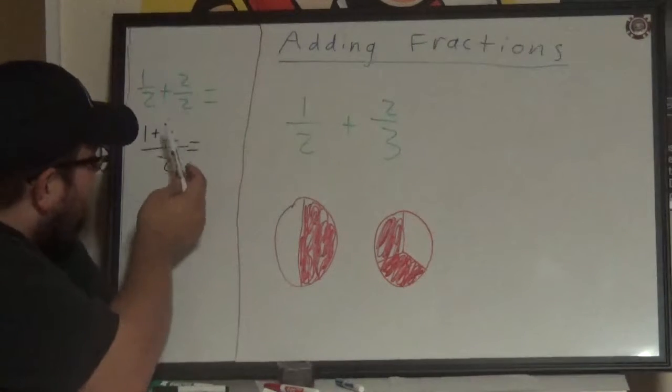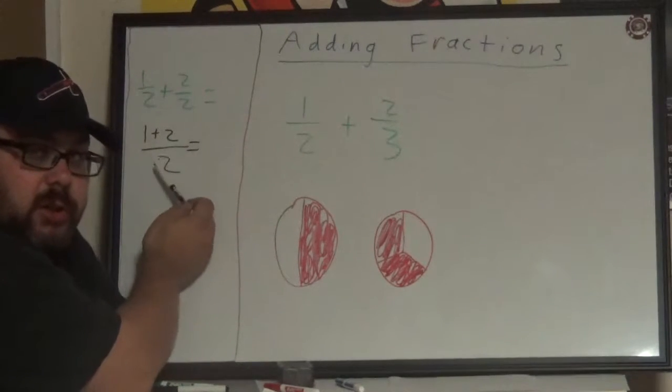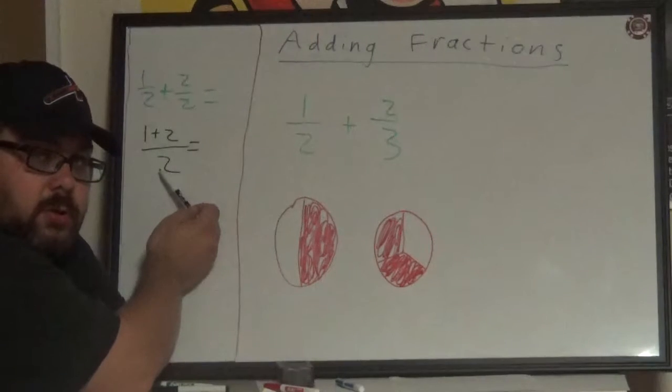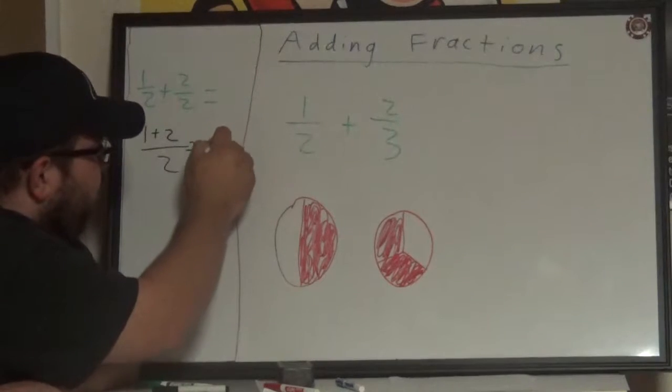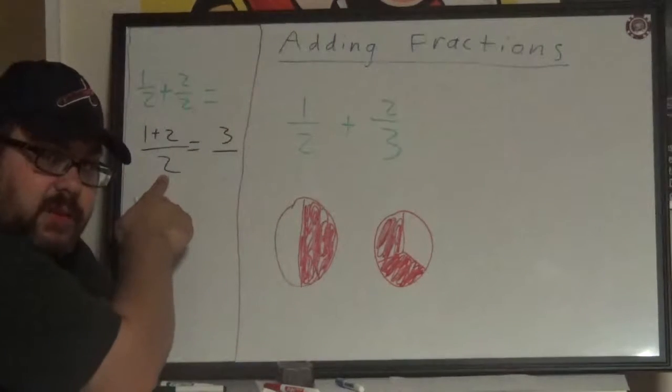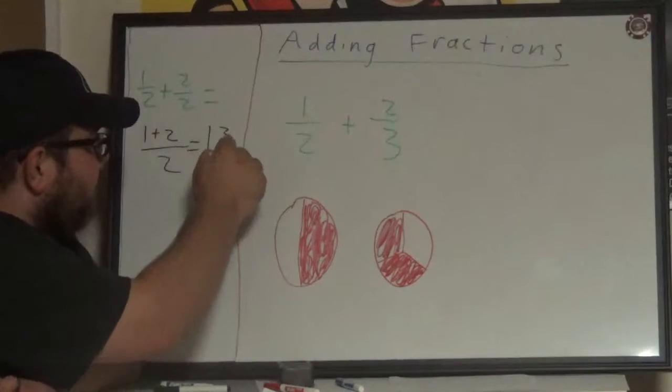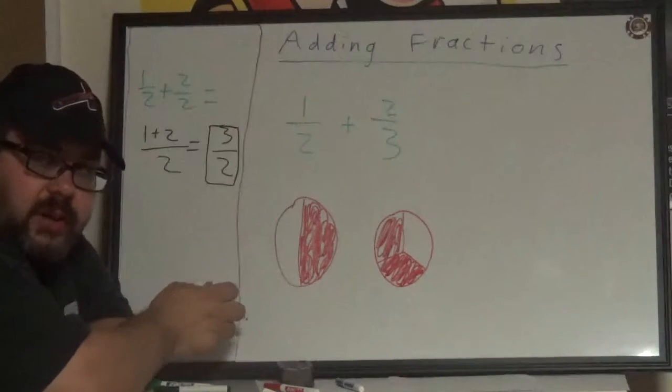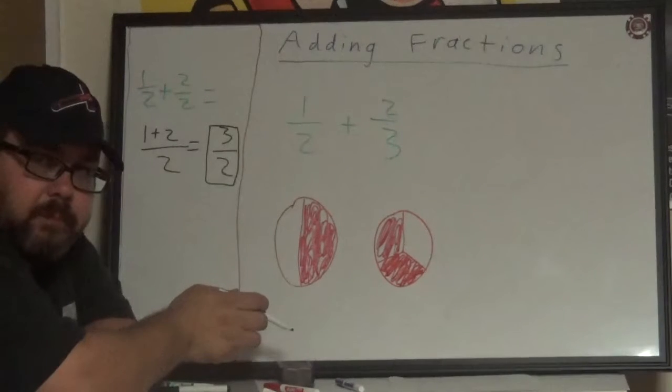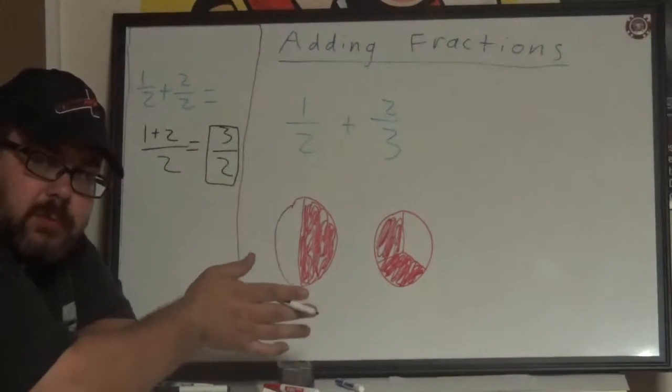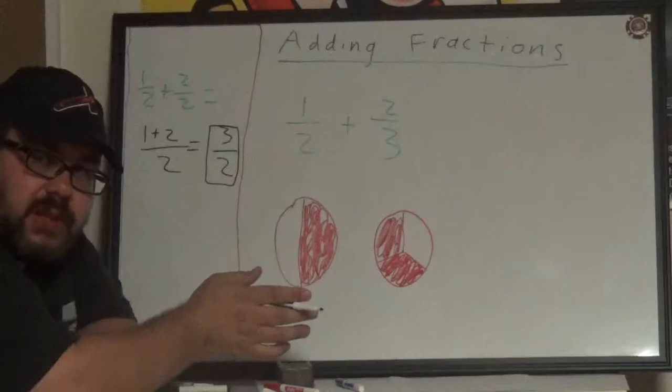So in this example, our numerator will change and our denominator will not. One plus two is three, and the denominator is already common between both fractions. Therefore, it stays the same, and our answer is going to be three over two. Now that's a pretty easy one because it has a common denominator.